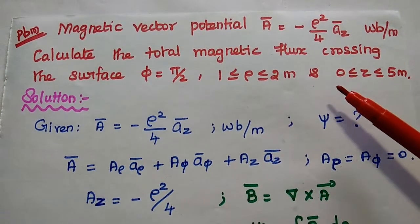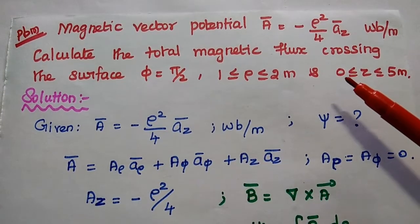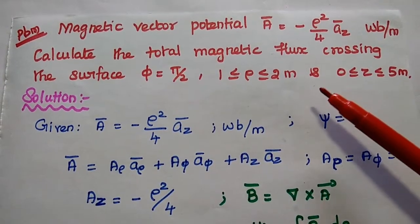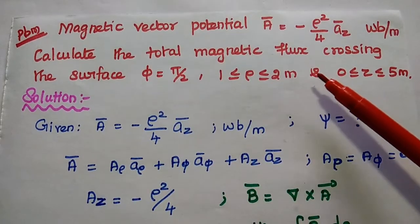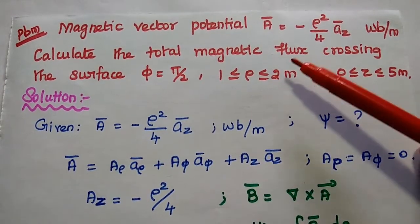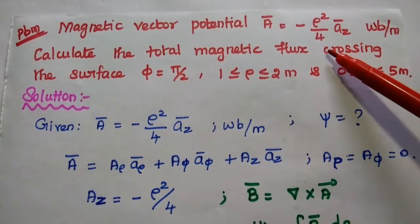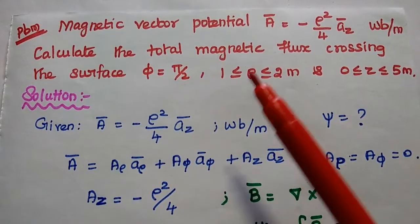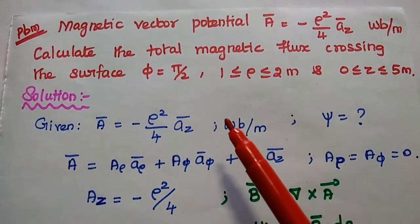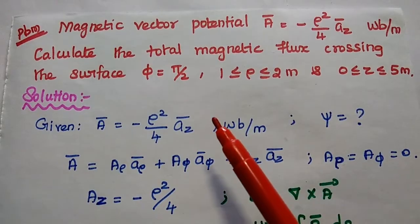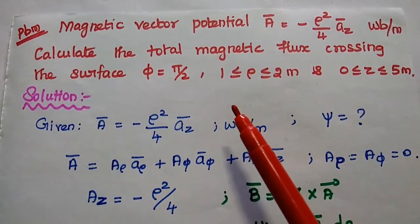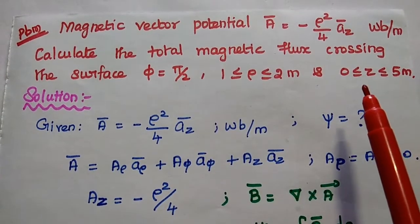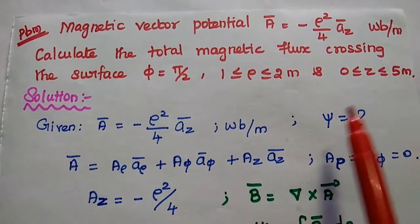Dear students, now we are going to solve one important problem in magnetic vector potential and magnetic flux. The magnetic vector potential is given as A vector equal to minus ρ² by 4 âz Wb/m. Calculate the total magnetic flux crossing the surface φ = π/2, where ρ is greater than or equal to 1 and less than or equal to 2 meters, and z is greater than or equal to 0 and less than or equal to 5 meters.